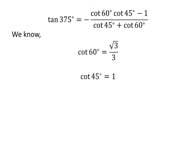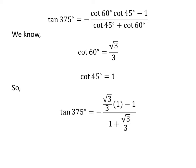As we know, cotangent of 60 degrees is equal to square root of 3 upon 3, and cotangent of 45 degrees is equal to 1. Plugging in these values, we get tangent of 375 degrees is equal to minus square root of 3 upon 3 times 1 minus 1, upon 1 plus square root of 3 upon 3.